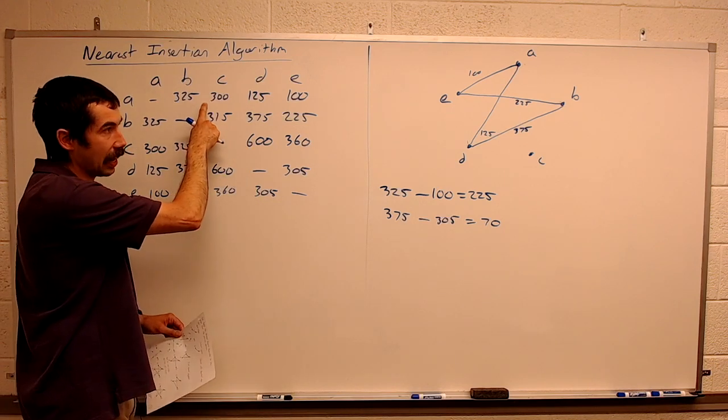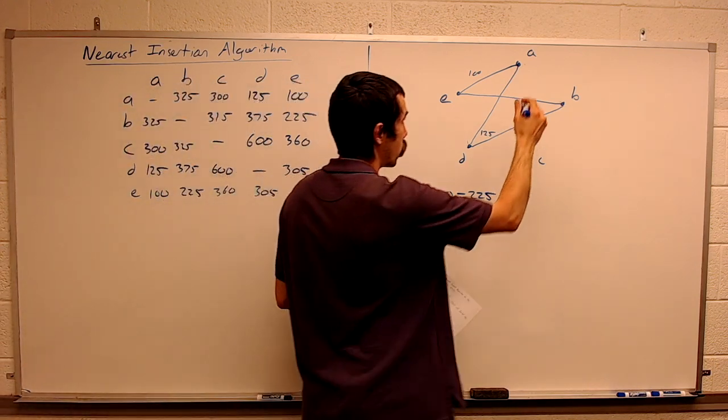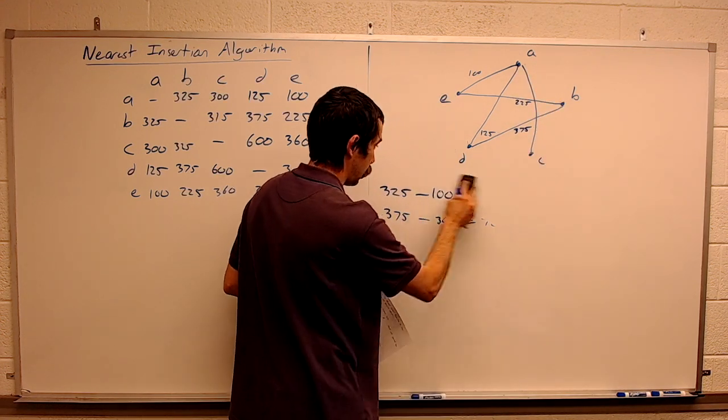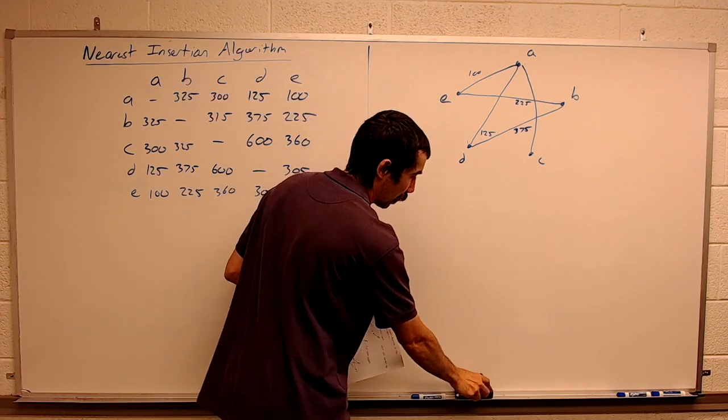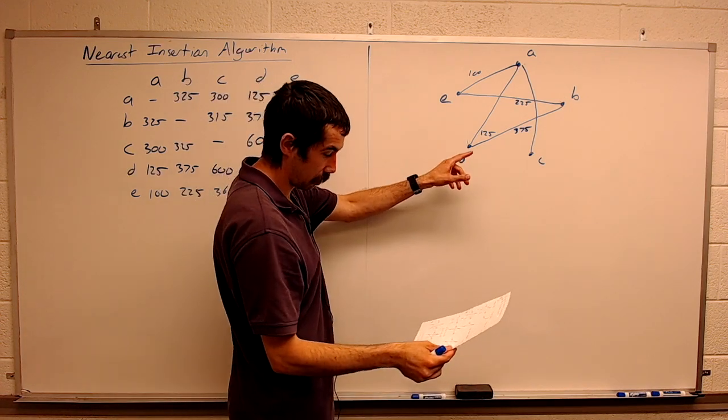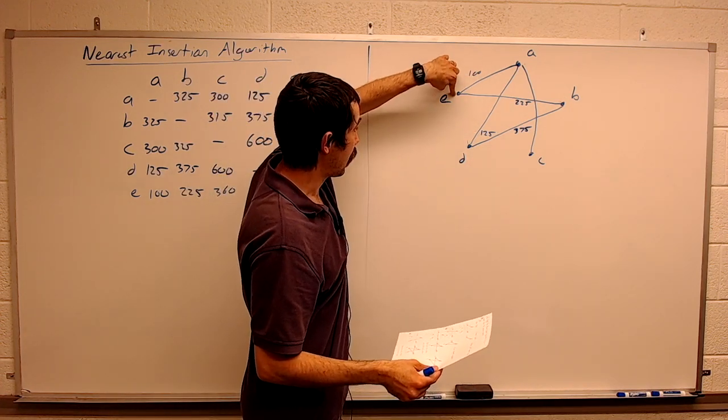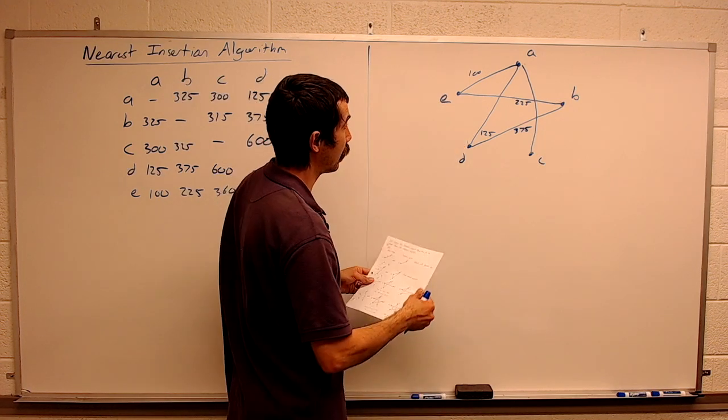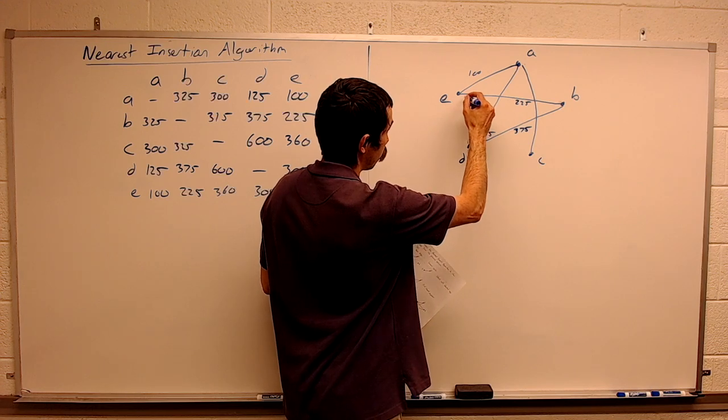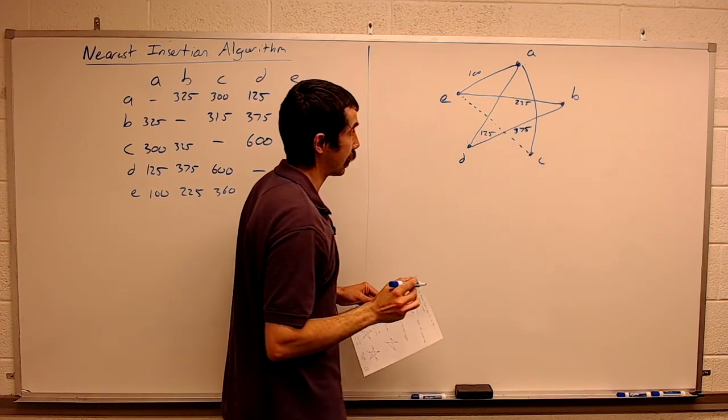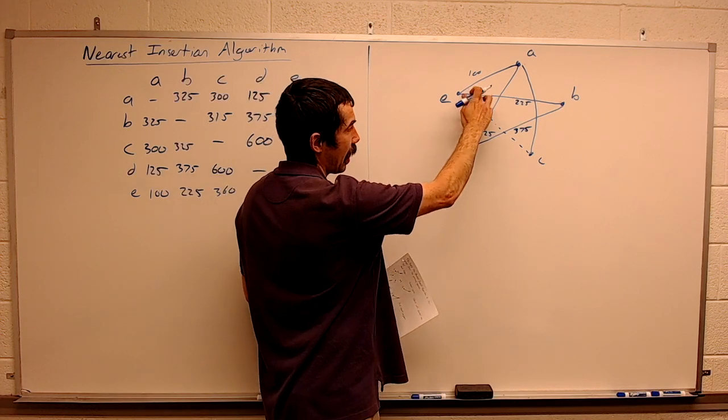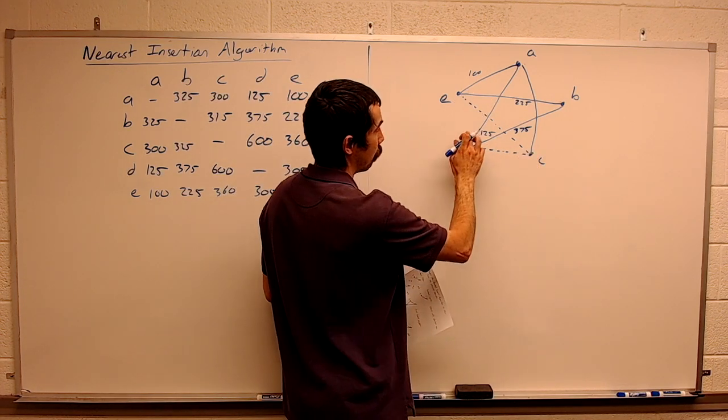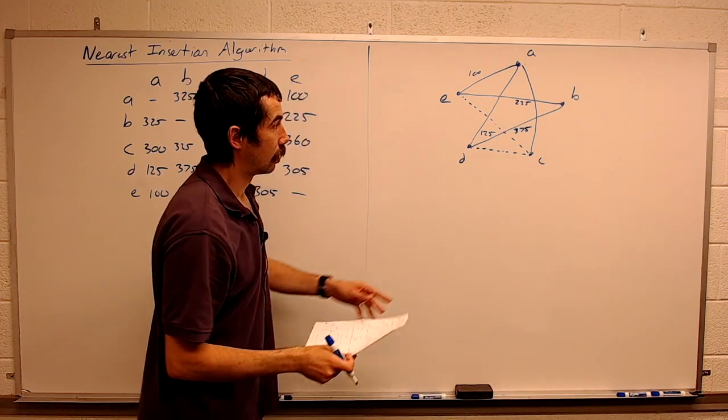C is closest to A. So we're certainly going to include this. And then the two options are we look at A's two neighbors, E and D. So we're either going to include CE and get rid of EA or we're going to include CD and get rid of DA.